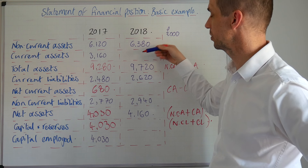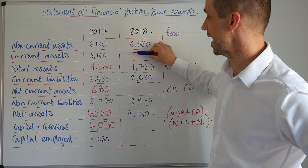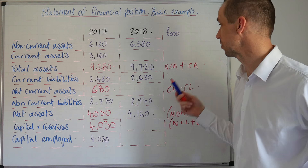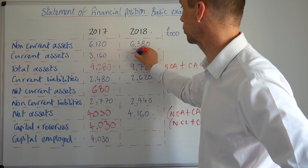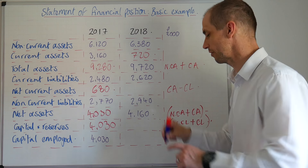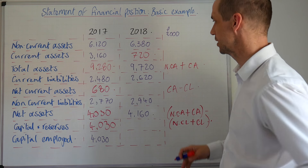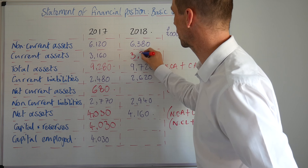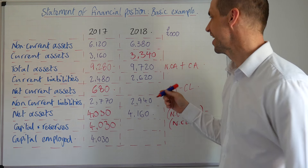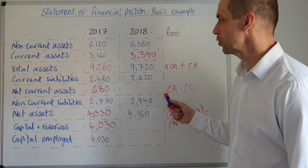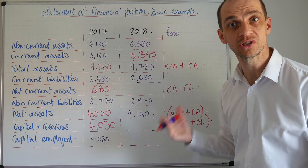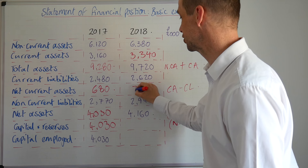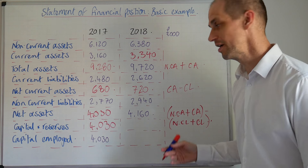Looking at the 2018 information, we've got current assets missing. We know the difference between our total assets and the non-current assets will give us that current assets figure — that's 3,340. For net current assets, it's current assets minus current liabilities, so putting that information in, we get 720.